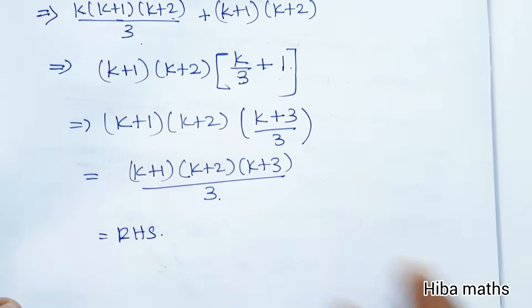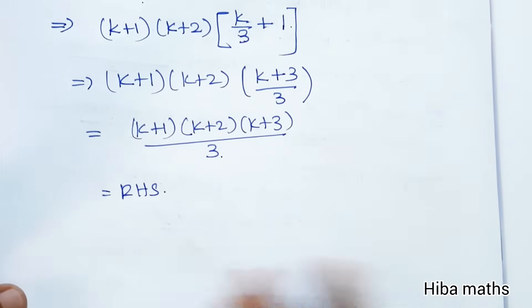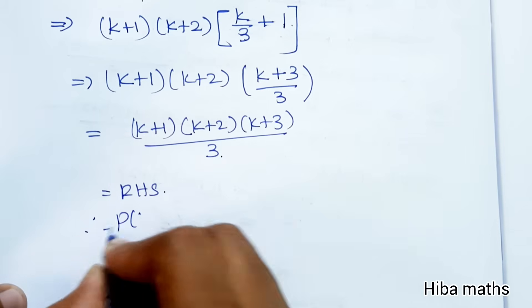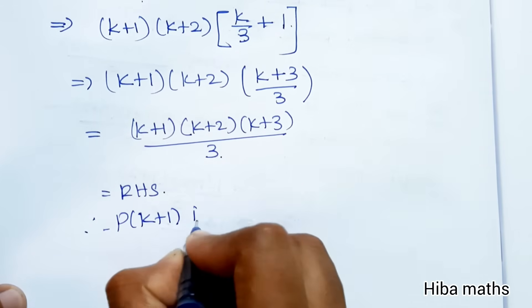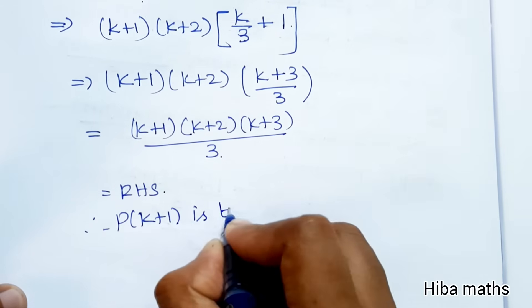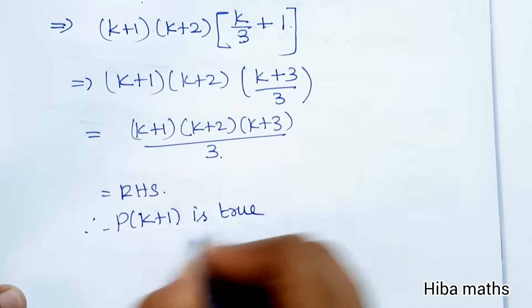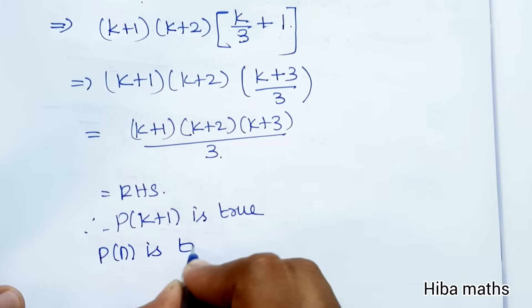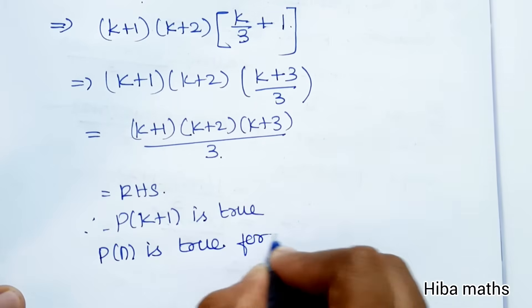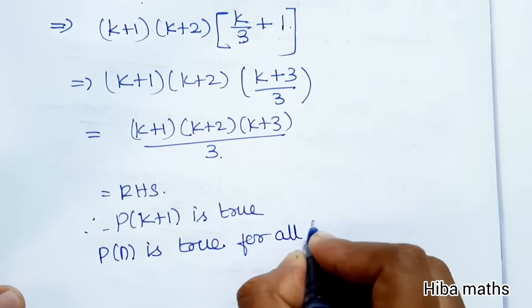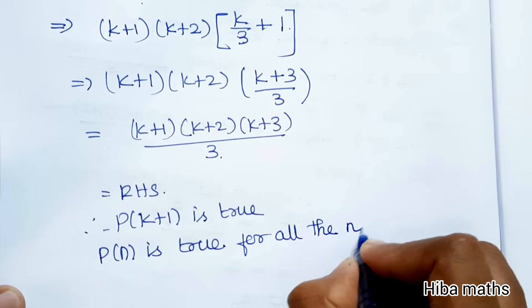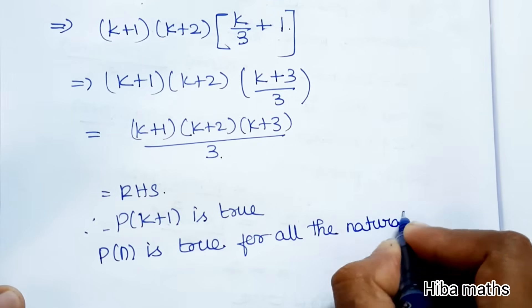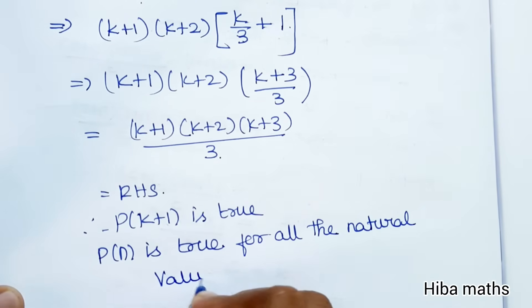This is our RHS, which is easy to understand — it is the same form. Therefore P(k+1) is true. Hence by the principle of mathematical induction, P(n) is true for all natural values of n.